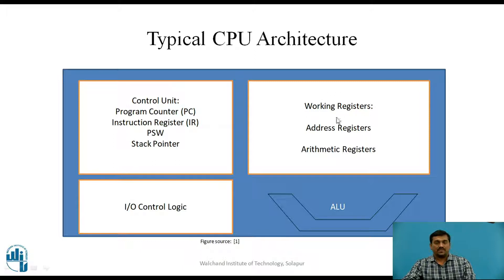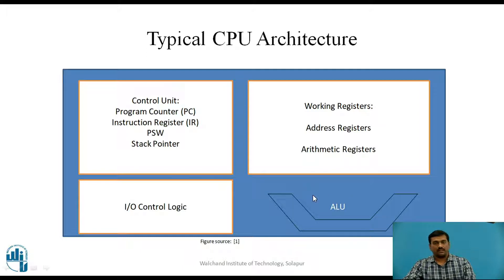The set of working registers is divided into two categories: address registers, which are responsible for carrying out address-related calculations, and arithmetic registers, for carrying out computational tasks. The arithmetic and logical unit is responsible for carrying out arithmetic and logical operations.